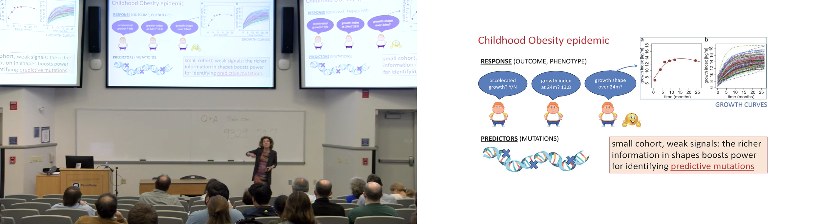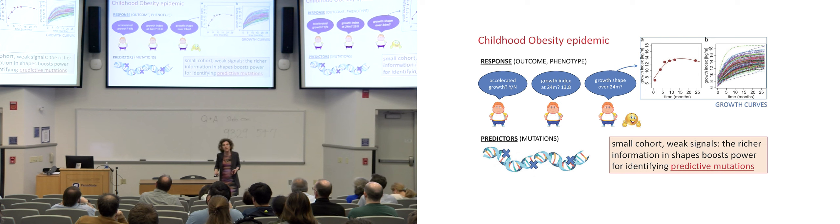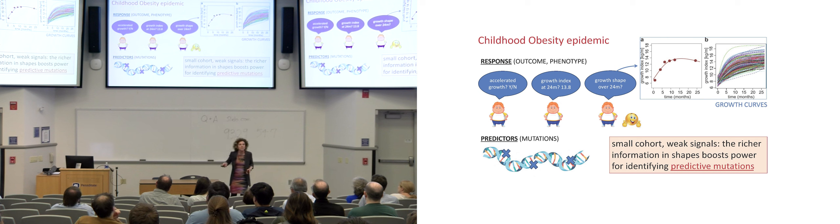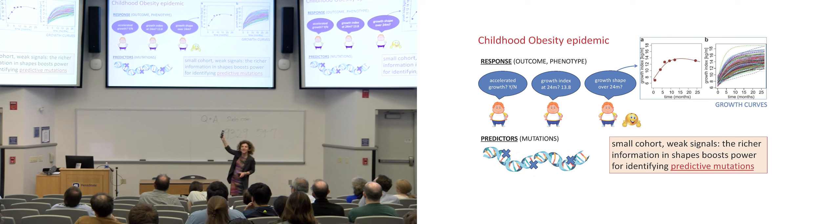Because of this, as we were screening through these hundreds of thousands of mutations that we wanted to use as predictors, we didn't have to look at, say, a binary outcome. Are you growing too fast or not? Or some kind of numeric outcome, maybe a growth index calculated at two years of age. We had the whole curve. We had information on the whole shape of the growth process over these two years of life. There you see our curves nicely processed, denoised and aligned. And that's what we used as the response.